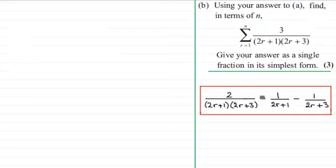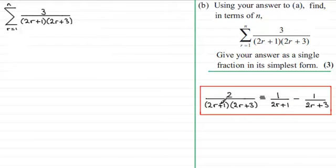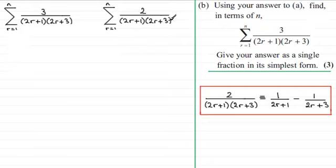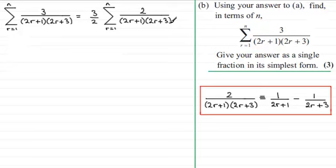Let's put down the question we're given: sigma r going from 1 to n of 3 all over 2r plus 1 times 2r plus 3. If we've got to use the answer from part A, I want to see how that links in. We've got 2 over 2r plus 1 times 2r plus 3, with sigma r going from 1 to n. I can't say this is equal directly — we've got 3 here and 2 there — but they're equal if I multiply by 3 over 2. Those two 2s cancel, leaving 3 over 2r plus 1 times 2r plus 3. That's the link we need.